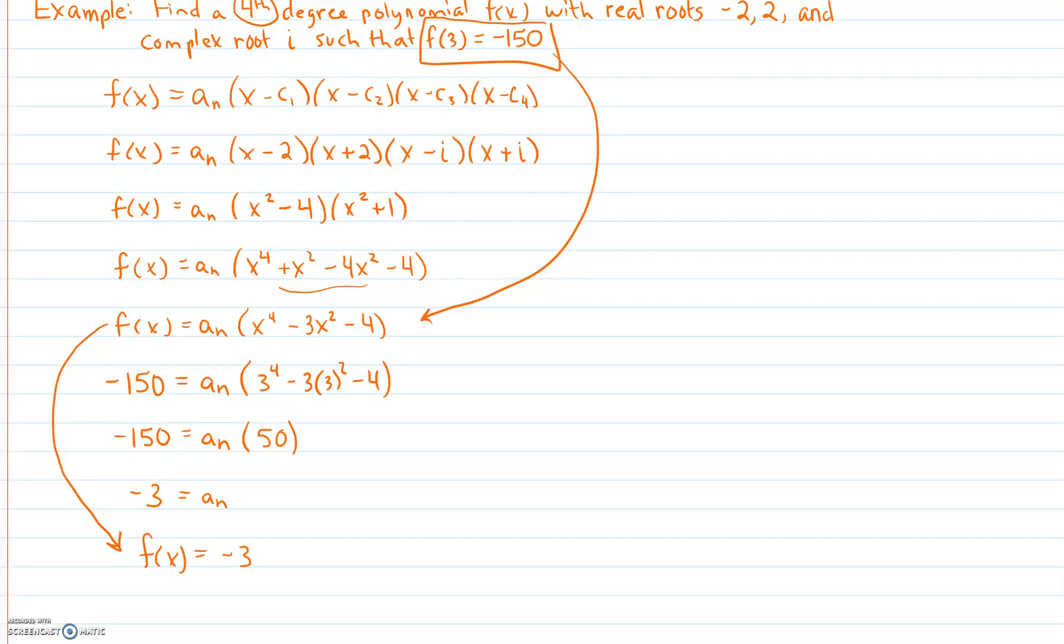Utilizing the step we had before, we can now say what the polynomial is. We know that negative 3 is the coefficient and that will go to these three terms that we computed earlier. So overall, our polynomial is negative 3x to the fourth plus 9x squared plus 12.